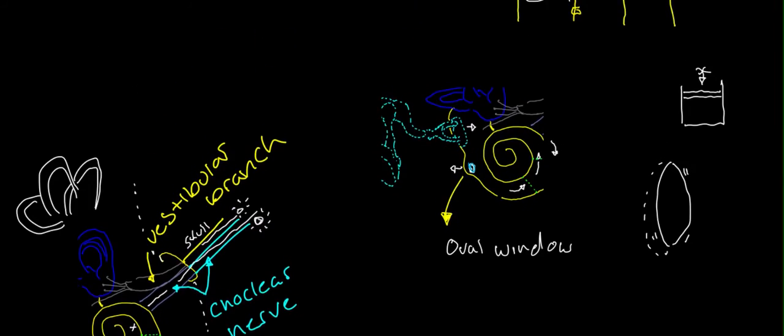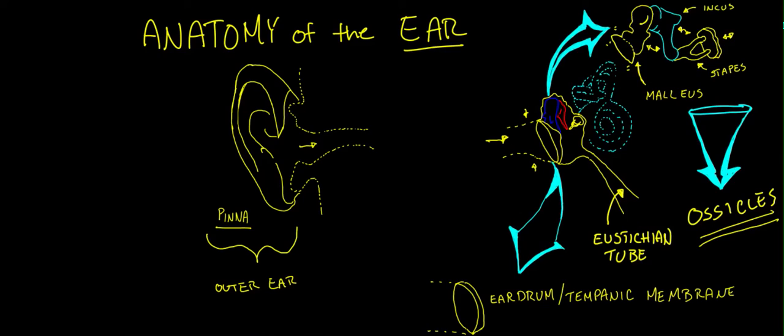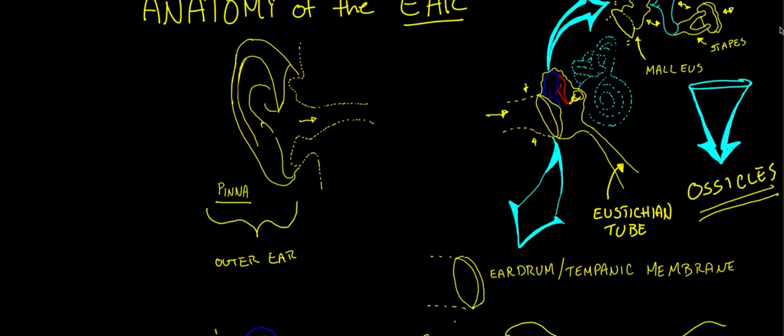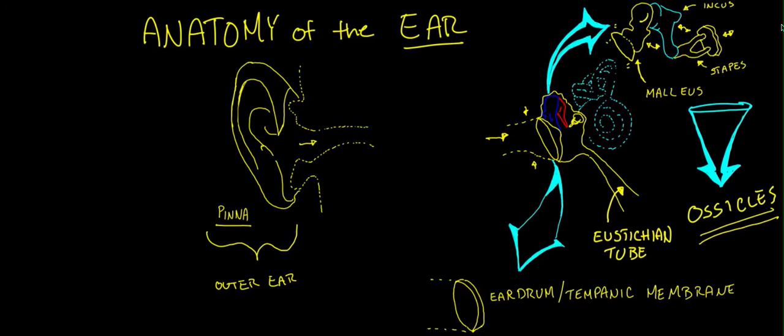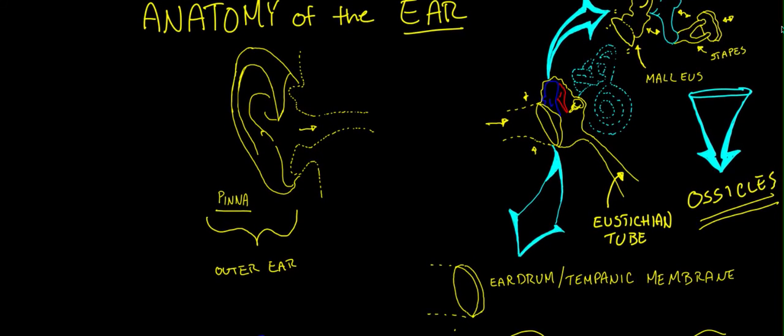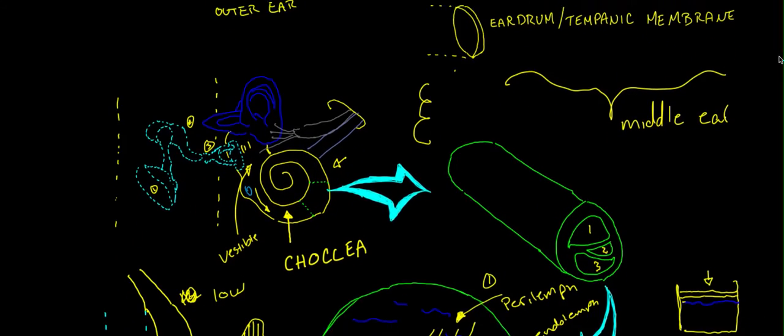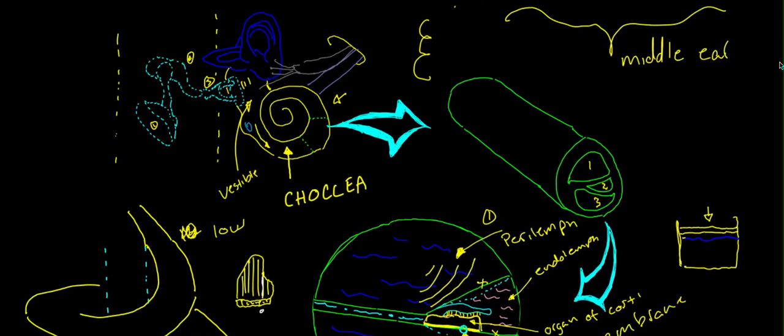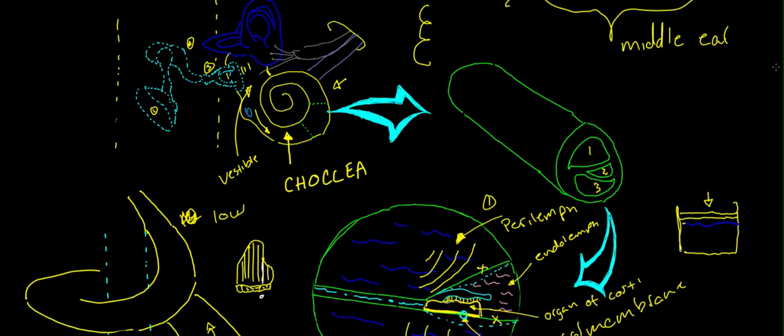So, hopefully that kind of helped you guys out for the anatomy or the structure of the ear. Again, we have the outer ear, which is just the pinna. We have the middle ear, which is the ossicles, the tympanic membrane, and the eustachian tube, which is the middle ear. And, then we have the inner ear, which is the cochlea, the vestibule, which is considered kind of just this section right here.